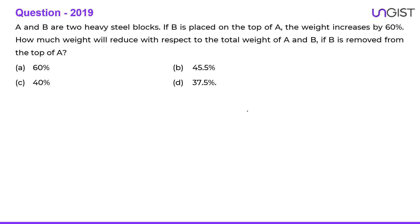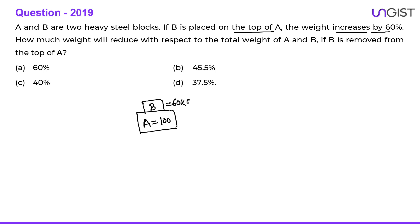First question: A and B are two heavy steel blocks. If B is placed on top of A, the weight increases by 60 percent. Let us say the weight of A is 100 kg and the weight of B is 60 kg. When B is placed above A, the total weight becomes 160 kg — so the weight increases by 60 percent.